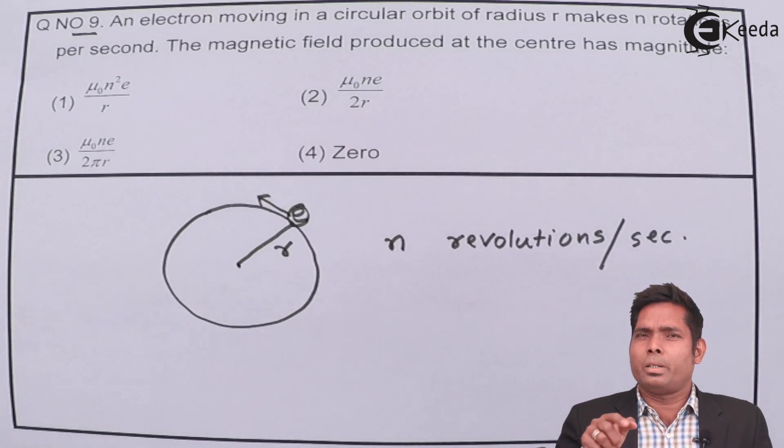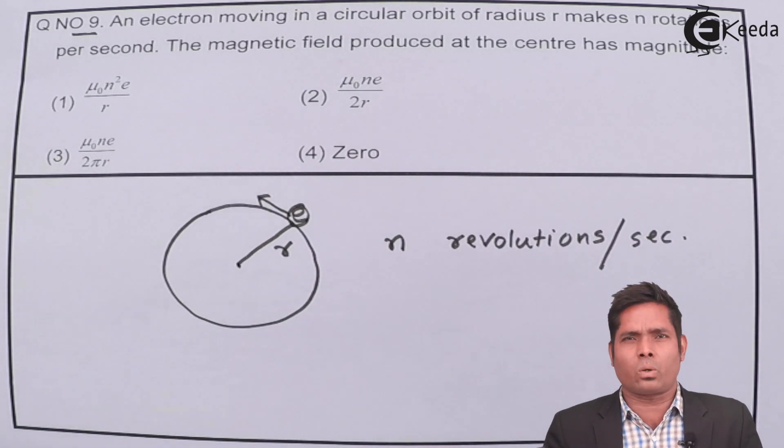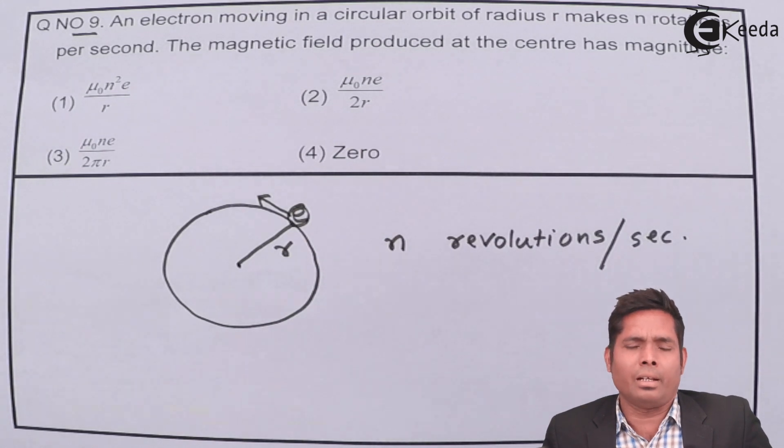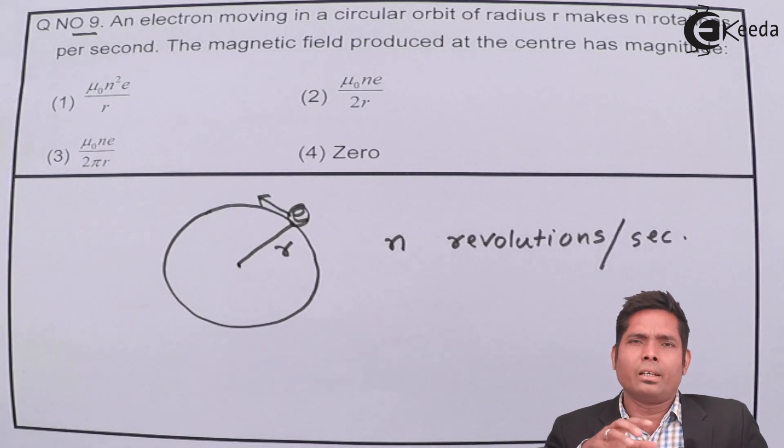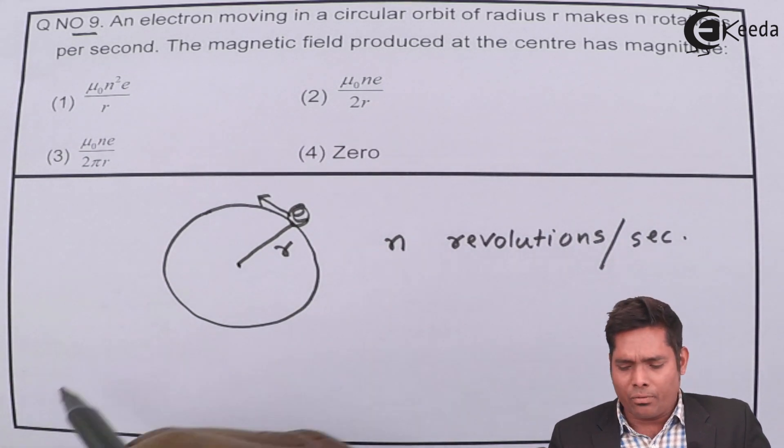So, electron is moving in a circular orbit. That means, charge is moving in an orbit. This is the motion of the charge. So, the motion of the charge, the motion of the electron will create electricity. That is electric current. So, that is electric current and the loop in which it is revolving is like a wire carrying current.